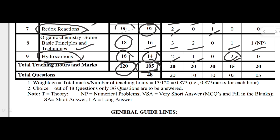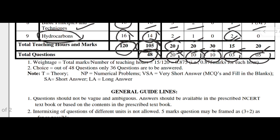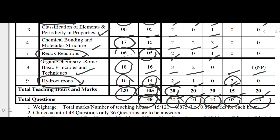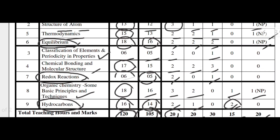The total marks are 105 and total questions are 48. The very short answer type questions carry 20, 30, 15, and 20 marks respectively across sections. If you go through this blueprint carefully, you will easily get good marks in your annual exam.